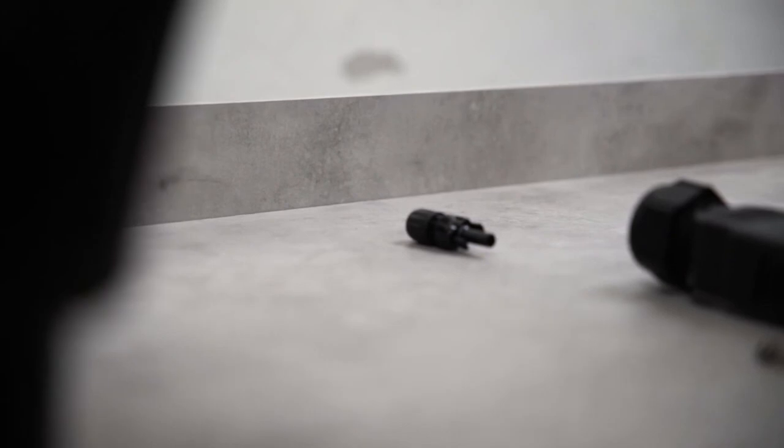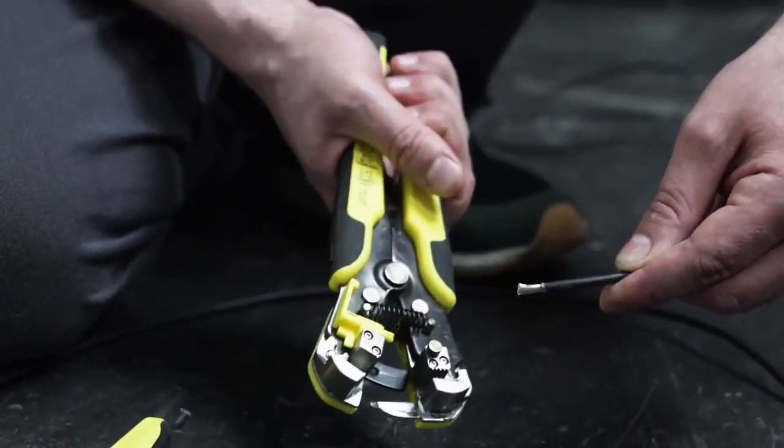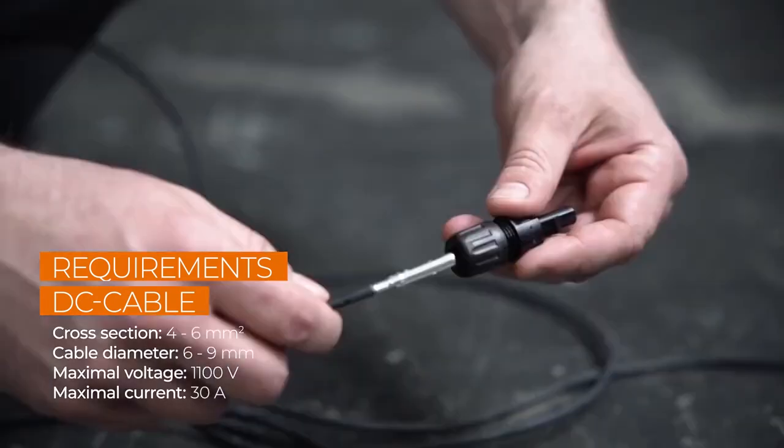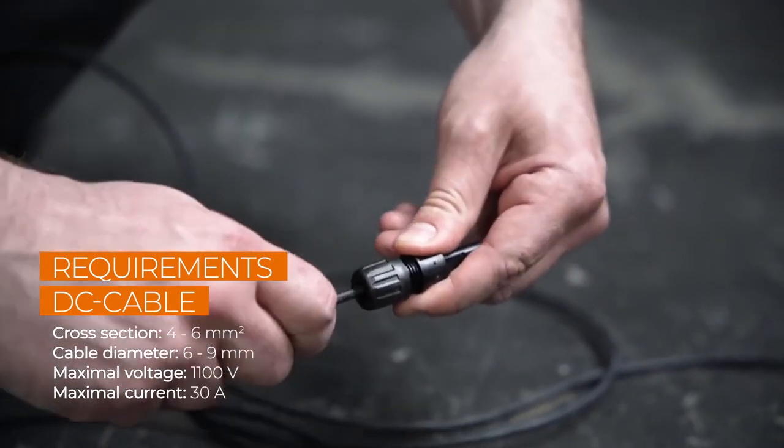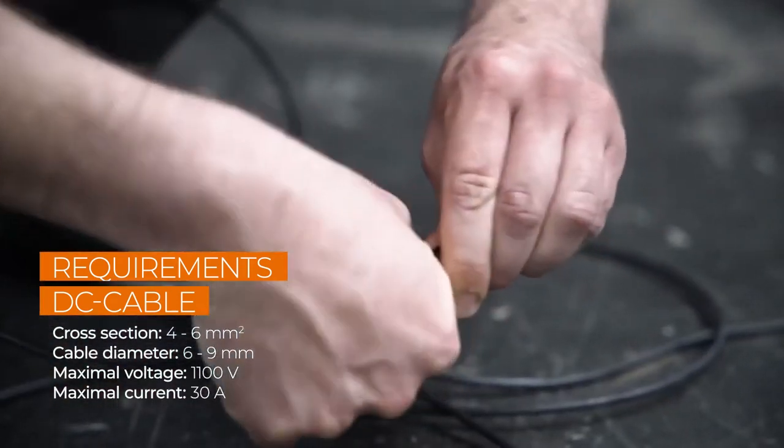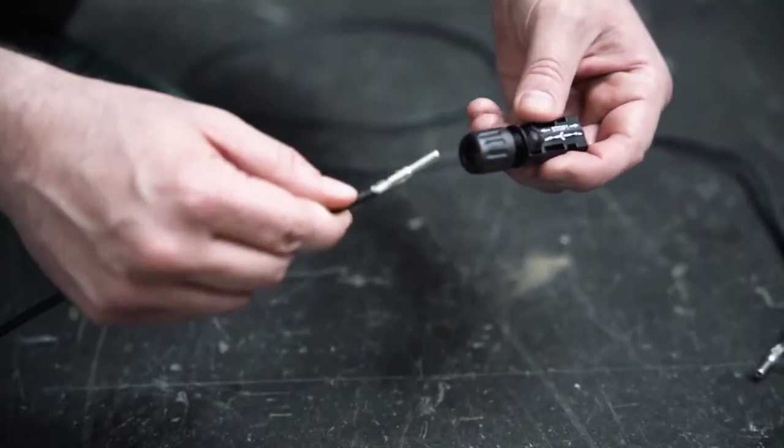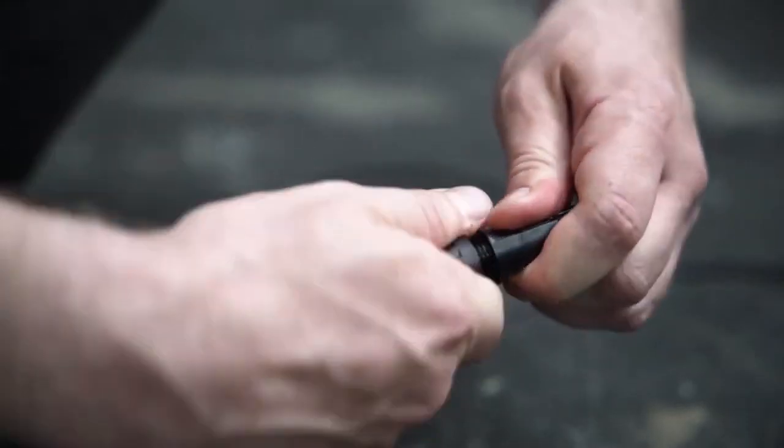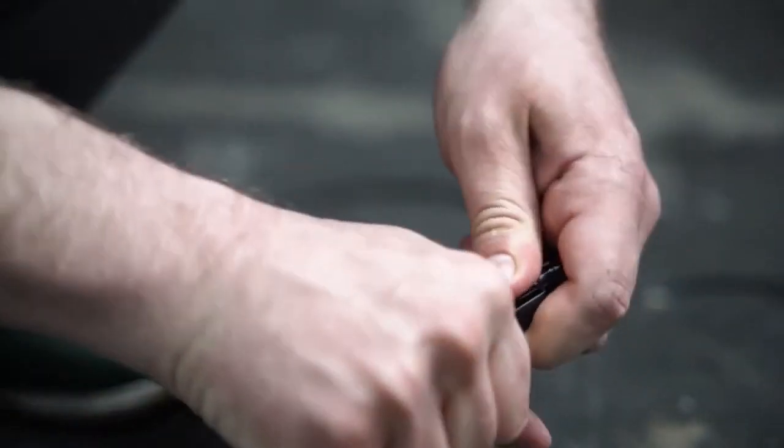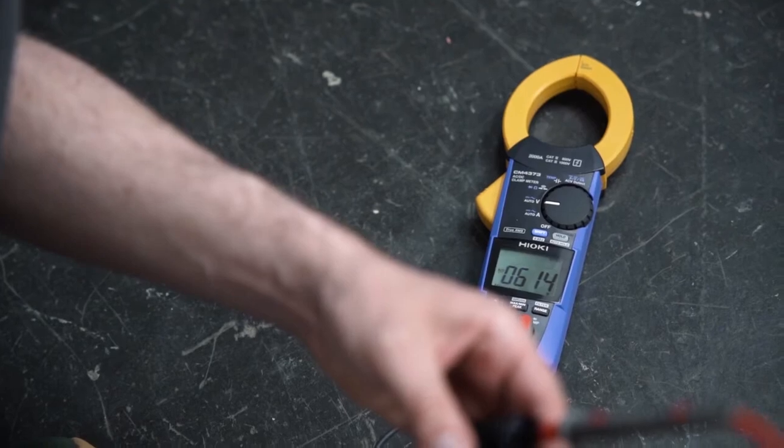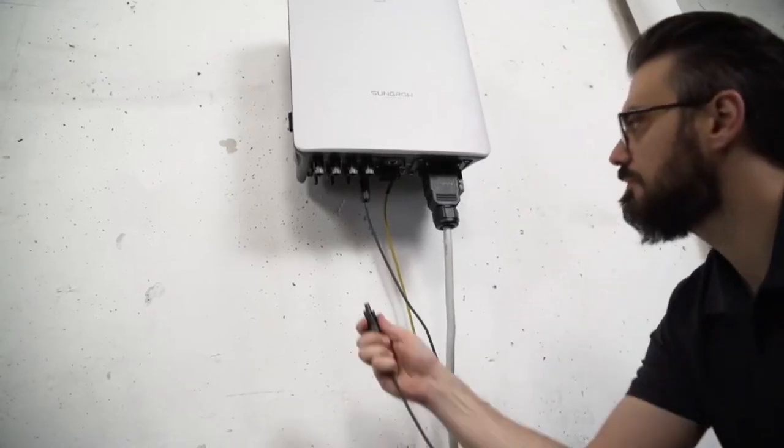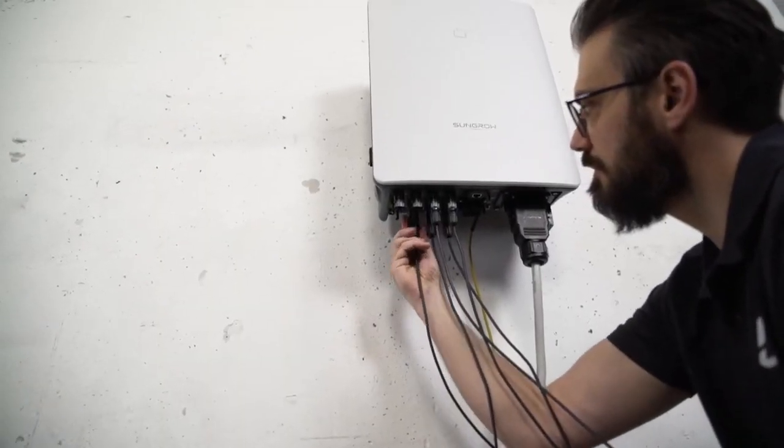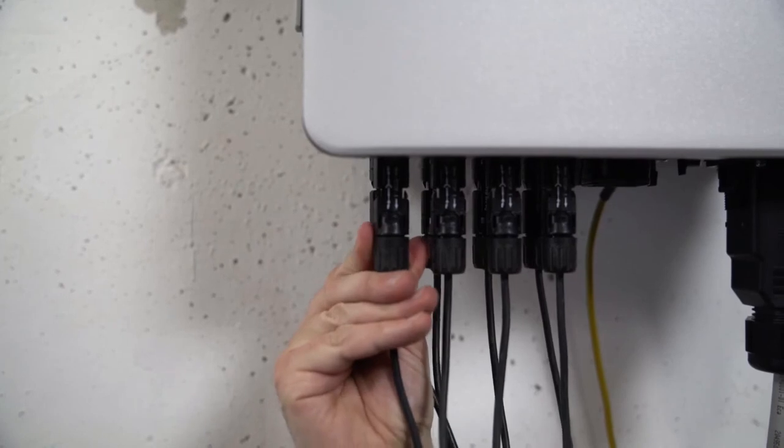Now let's take a look at the DC connector. After stripping the insulation, you have to attach a crimp contact. For this, you have to check the polarity, because each pole has different terminals that need to be crimped. The polarity is marked on the inverter. Then push the cable into the insulating sleeve until it snaps into place. Screw it and that's it. Check again that the polarity corresponds to the imprint. The finished plugs only fit to the appropriate connections. The amount of DC inputs varies depending on the power range of the inverter.